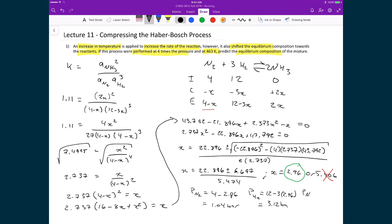And my partial pressure of ammonia, that's going to just be equal to 2 times 2.96, which gives me a partial pressure of 5.92 bar.